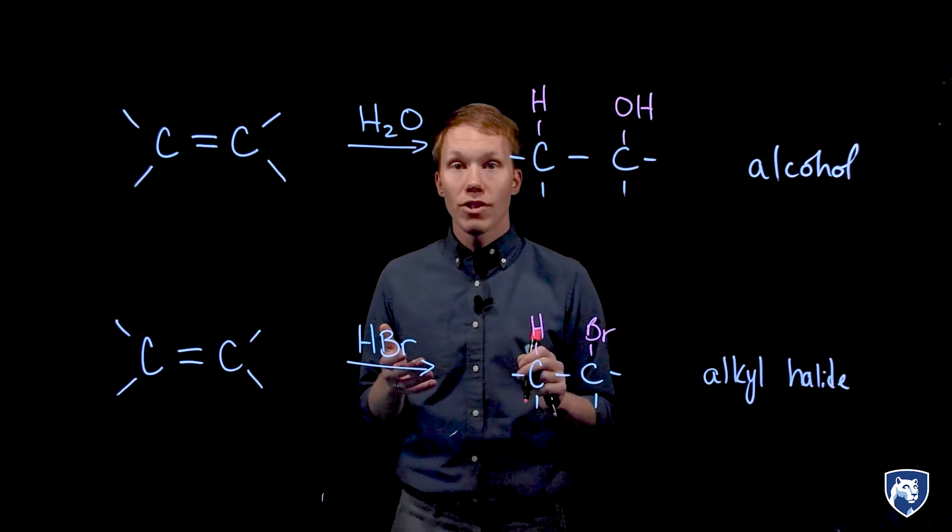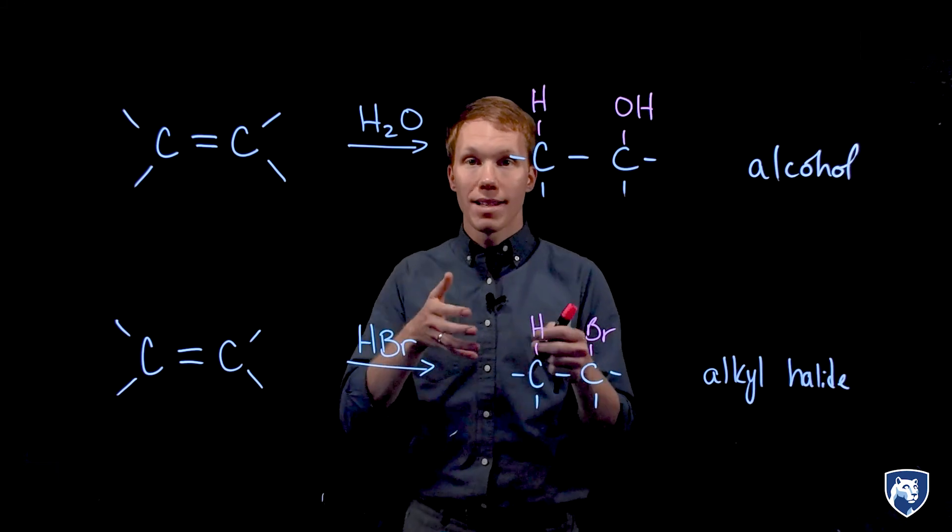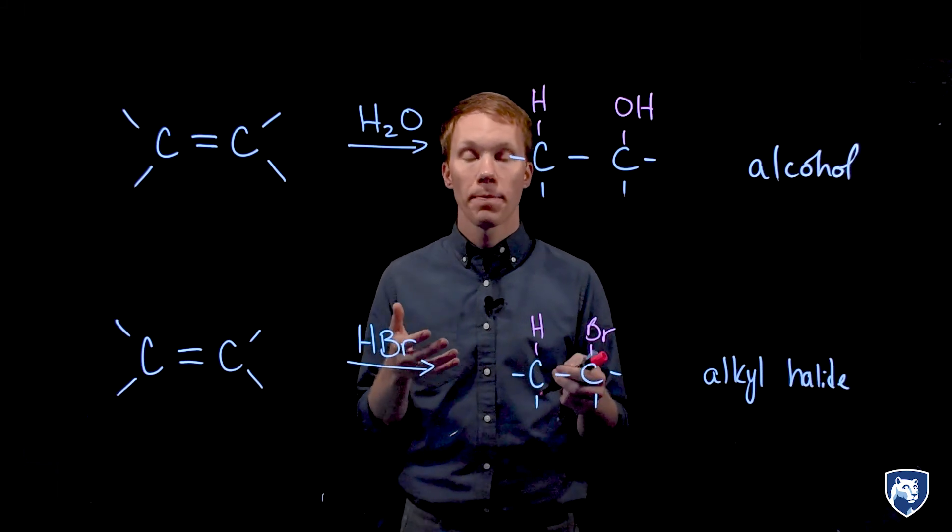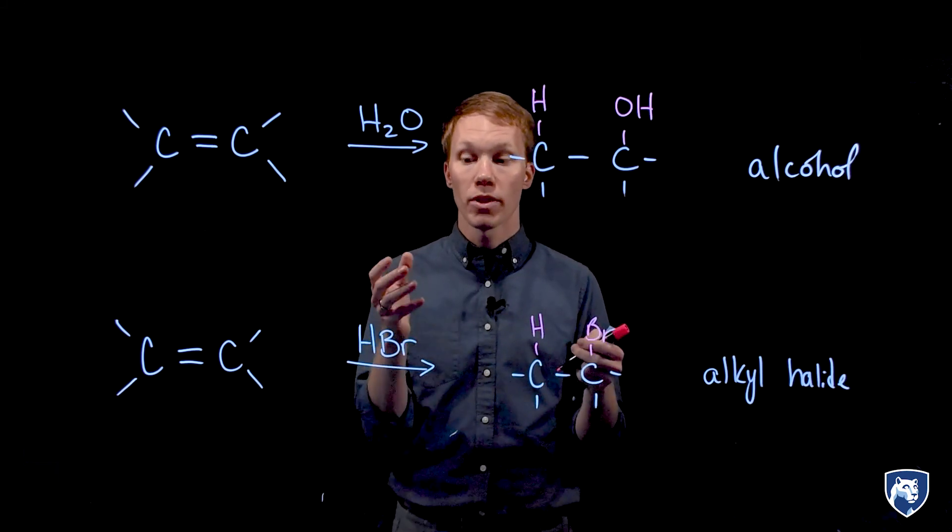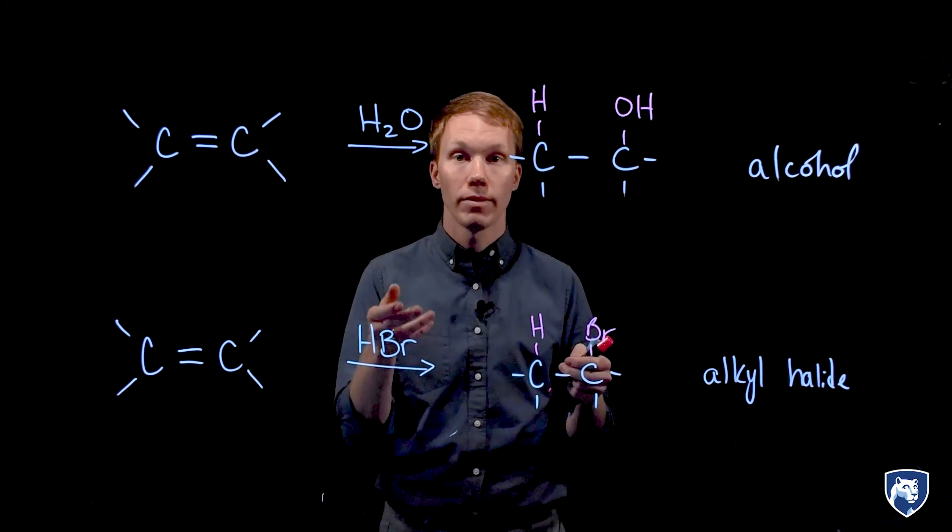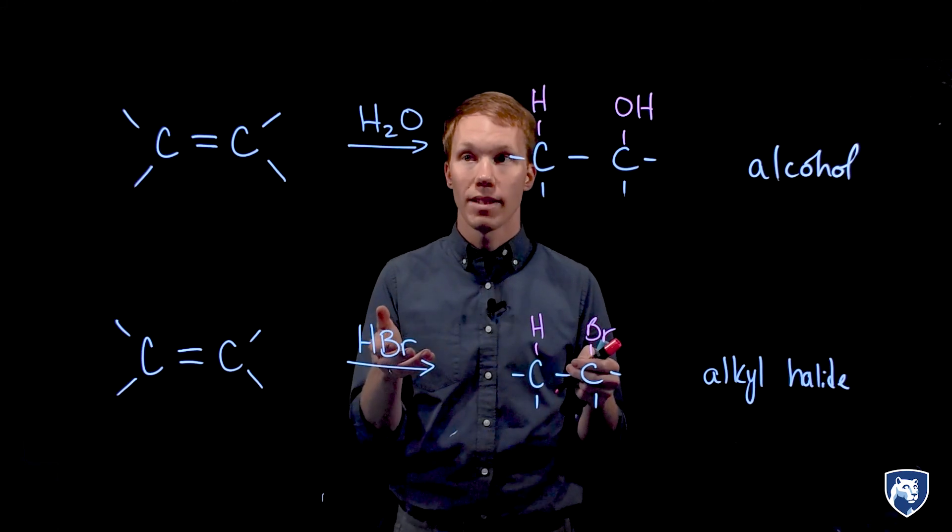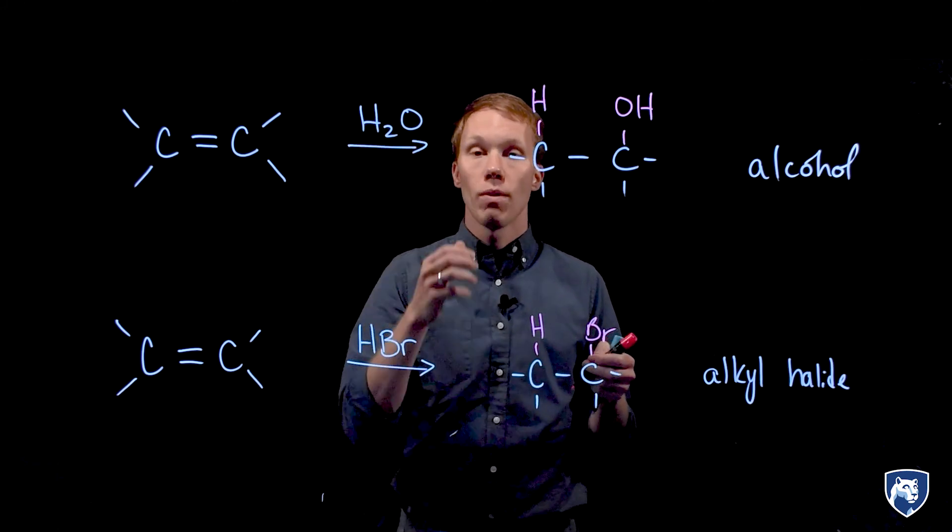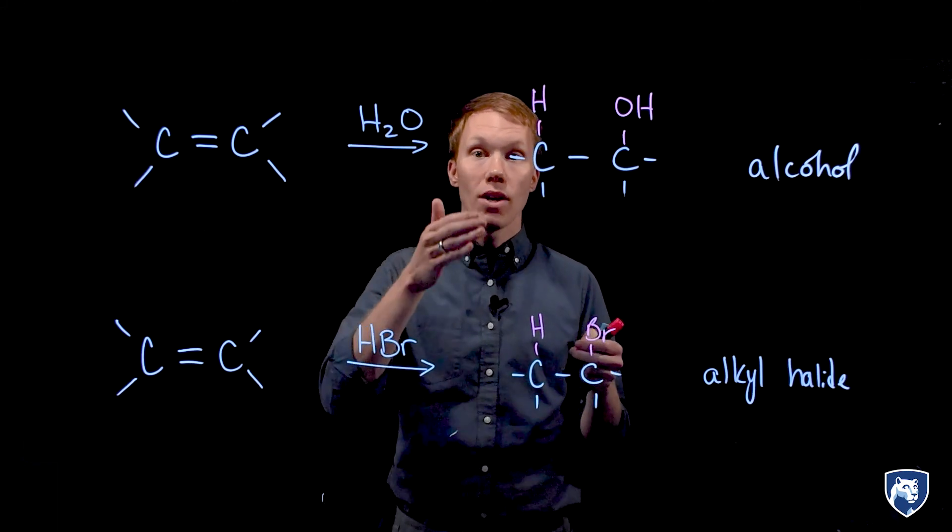These two reactions both add H and something else to that alkene, and the something else comes from the structure of your reagent. In HBr we're adding a bromine or any other HX acid. In H2O we are adding H and OH.